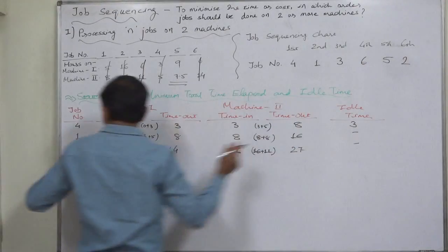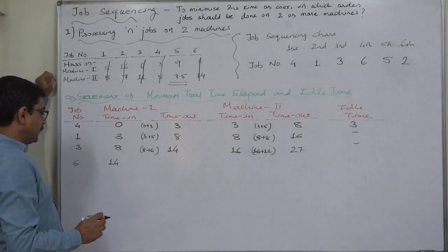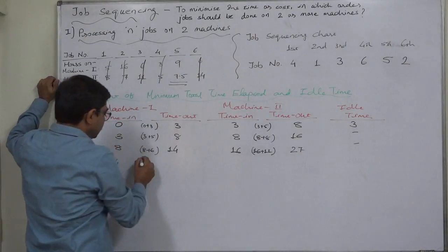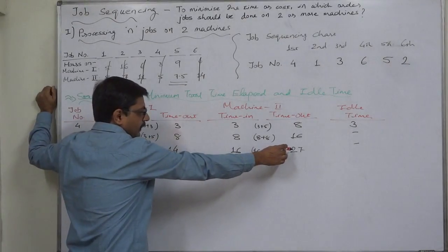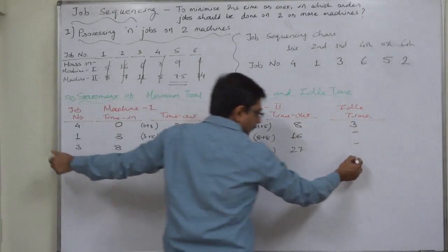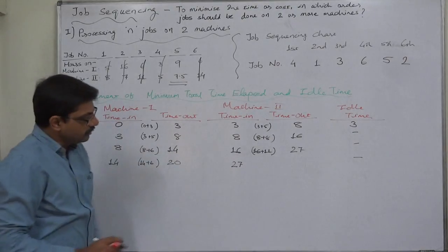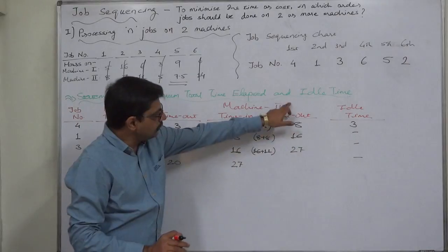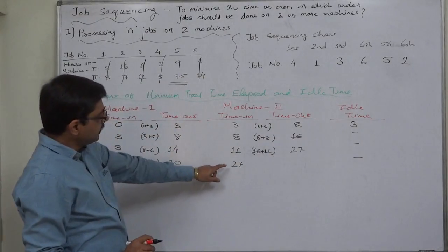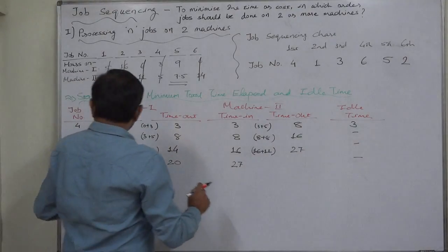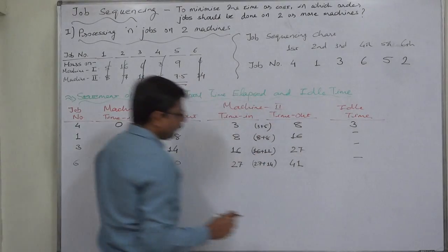On machine 1, it is now the turn of job number 6 after completing job number 3. This 14 becomes the starting point or time in on machine 1 for job number 6. Job number 6 requires 6 hours on machine 1, so its time out on machine 1 is 20. But at that time machine 2 is busy, so again the job has to wait — no idle time. Idle time is there only if the machine has to wait. 20 or 27, whichever is higher, becomes the time in for job number 6 on machine 2. Job number 6 requires 14 hours on machine 2, so its time out will be at the 41st hour.